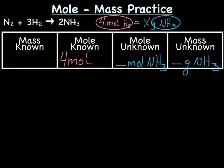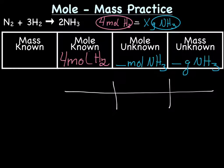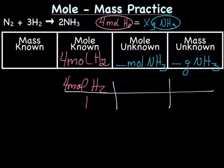We now have the math problem and our map set up—making sure to write H2 in the mole known area. Now we can start the problem. We'll set up the grid, aligning it with our map. The first thing to do is drop whatever is in the starting box right down, so we write our known: 4 mole H2 over 1.